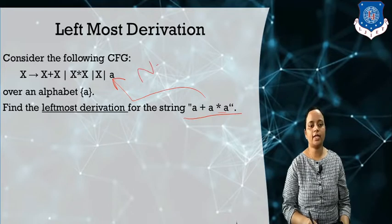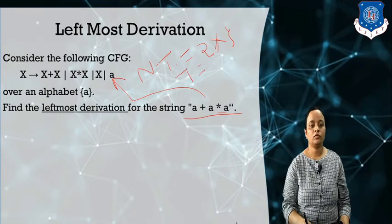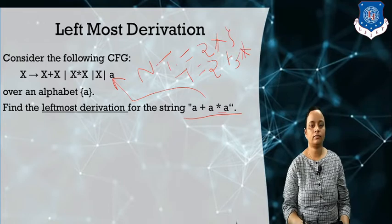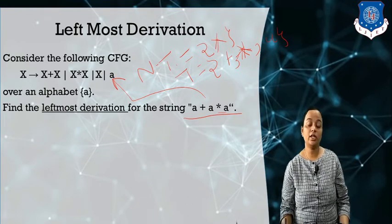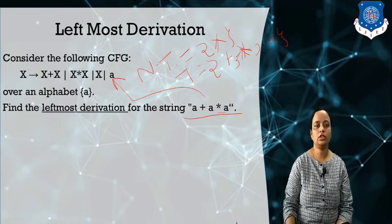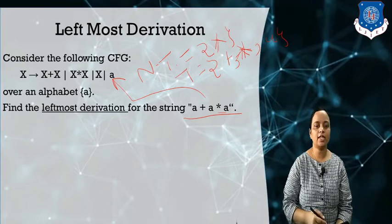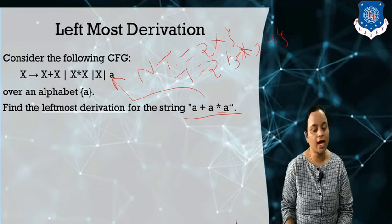In this grammar, our non-terminals are capital X, and our terminals are the operators plus, star, and small a. The operators and small lowercase a are all included in terminals. The start symbol is X in this grammar. Now I want to derive the given string a plus a star a.